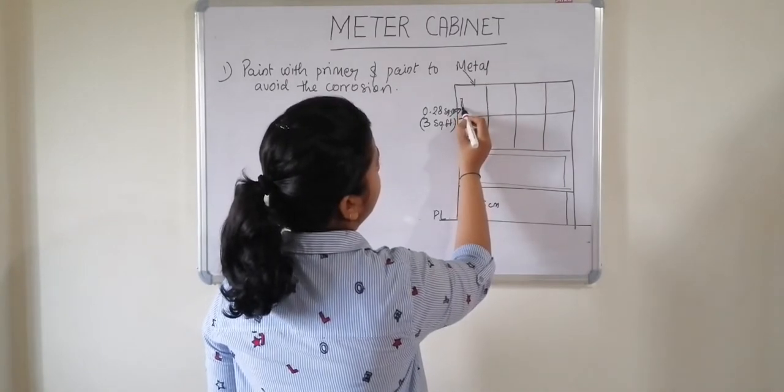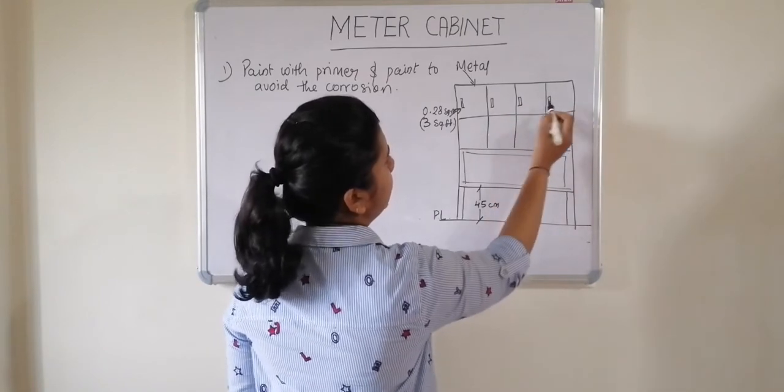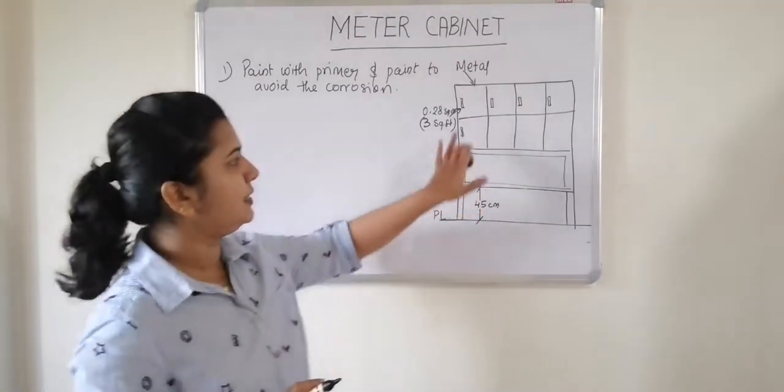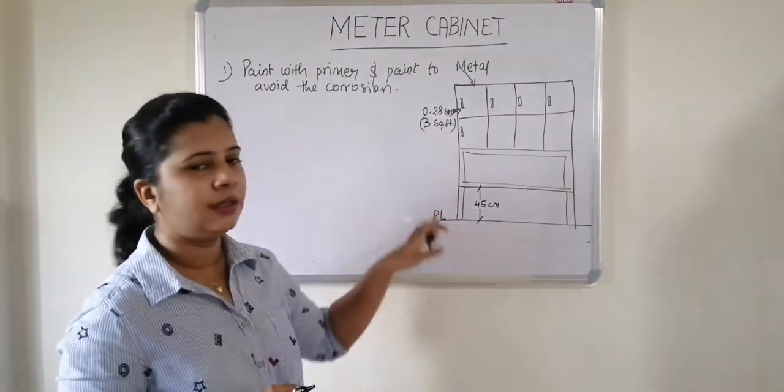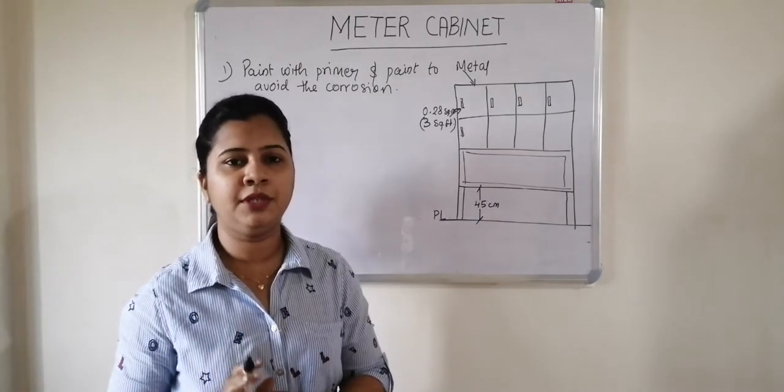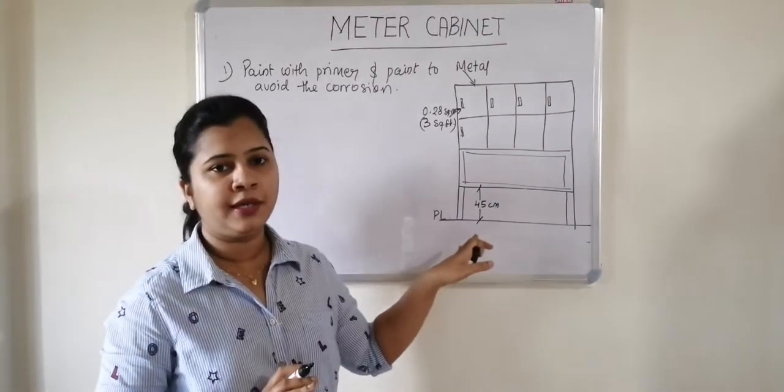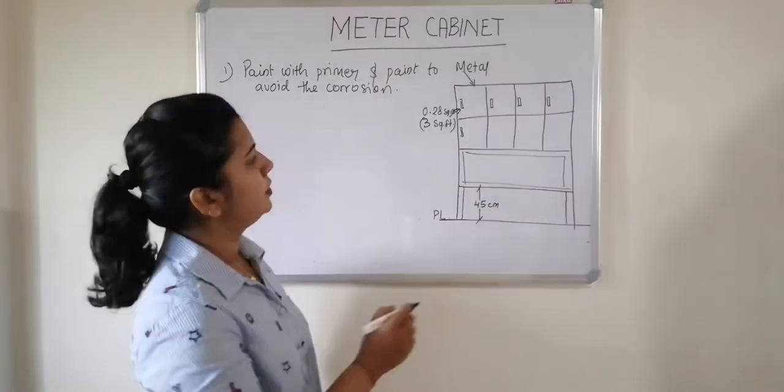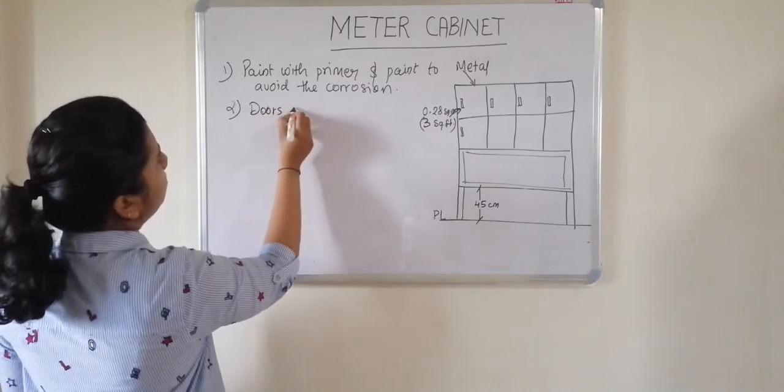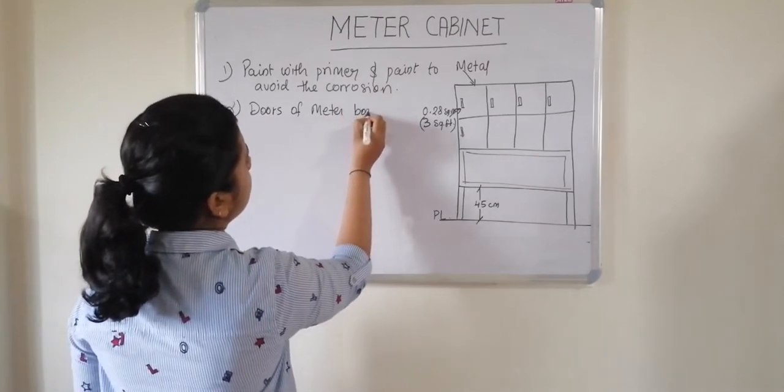Now next thing, you will see there will be a door provided to this meter box. Every meter box will contain a door. Now you should always take care that these doors are always locked and no one other than the electrician or the meter reader coming from the department, no one other than these people shall be allowed to work in this meter panel area. So second thing, this doors of meter box should be always locked.